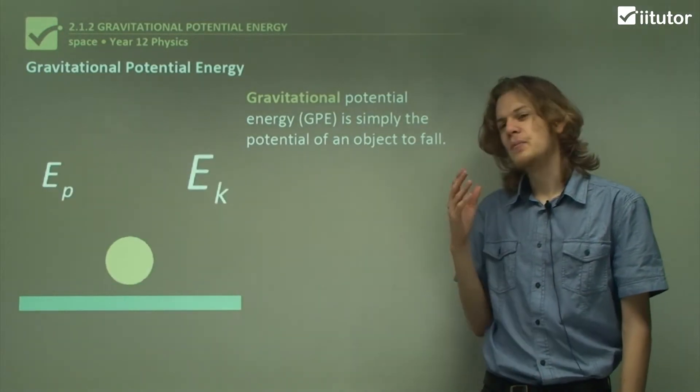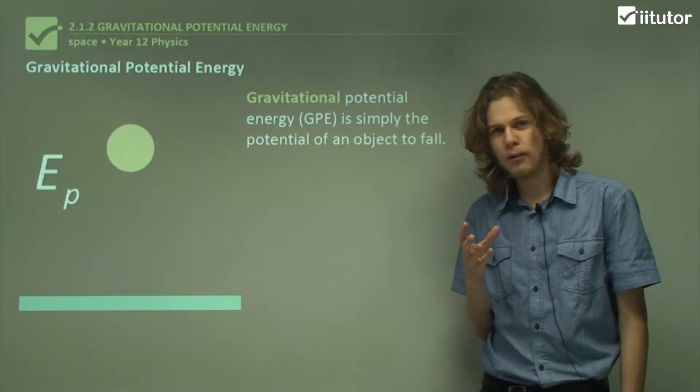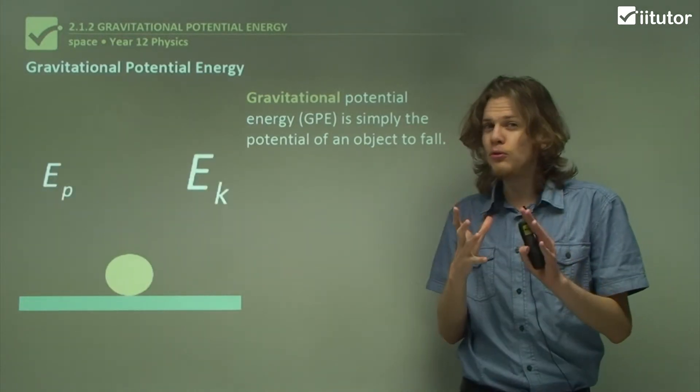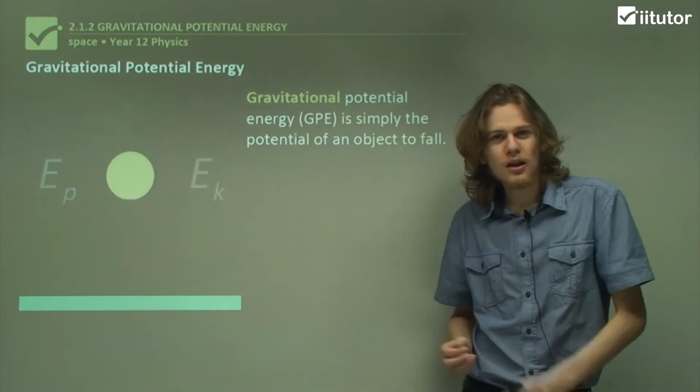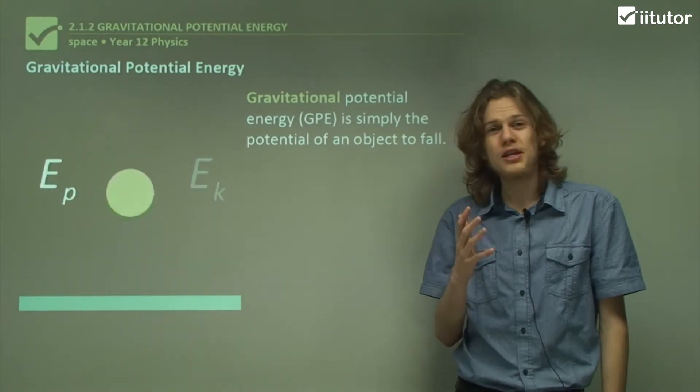Gravitational potential energy is the potential of an object to fall. If an object is capable of falling, or even of rolling down a hill, then it will have gravitational potential energy.